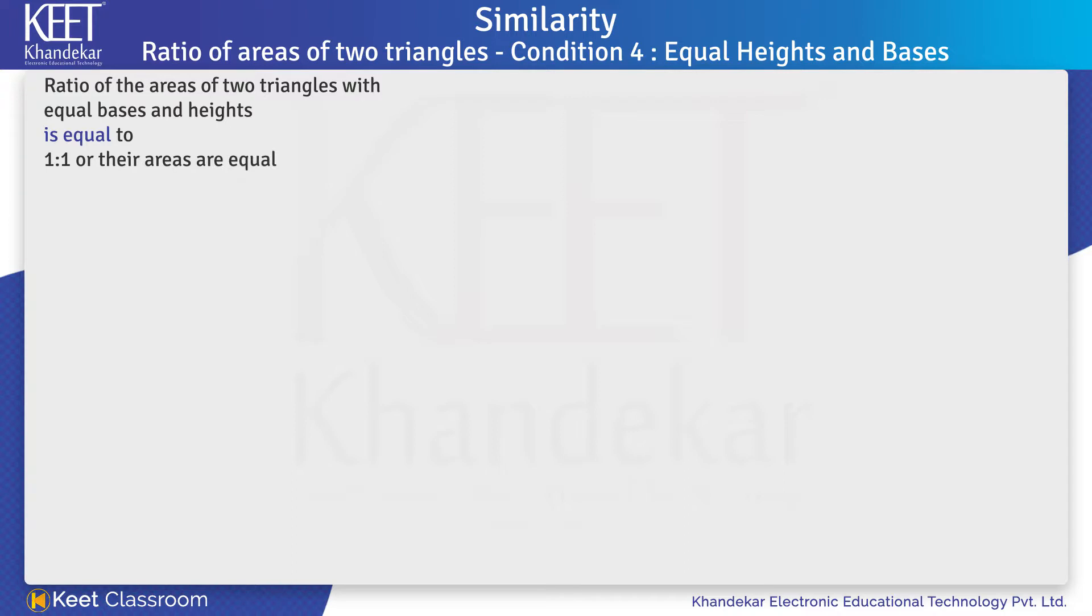Let us prove this statement. On analyzing the statement, the first part of the statement is: Ratio of areas of two triangles with equal bases and heights. Let the two triangles be triangle ABC and triangle PQR as shown on the screen.